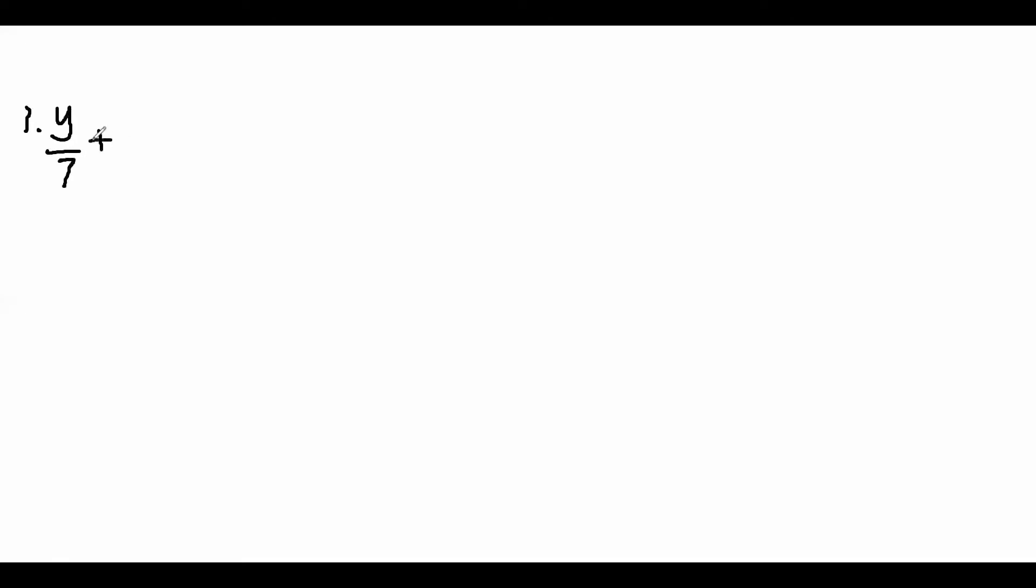For our first example, we have y over 7 plus 1 is equal to negative 10 over 7y. Let's find the LCD, which will now become 7y.